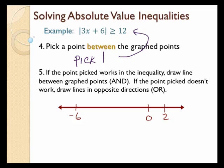Let's try 1. So 3 times 1 is 3, plus 6 is 9. The absolute value of 9 is 9. And 9 is not greater than or equal to 12, so the 1 doesn't work. That means it's not an 'and' — in this case, it's going to be an 'or.'